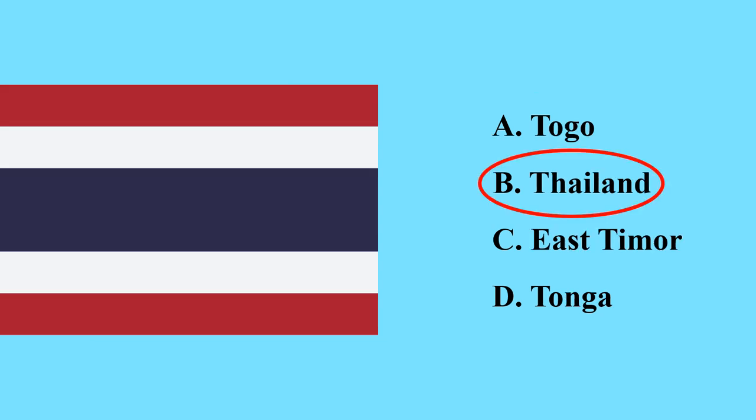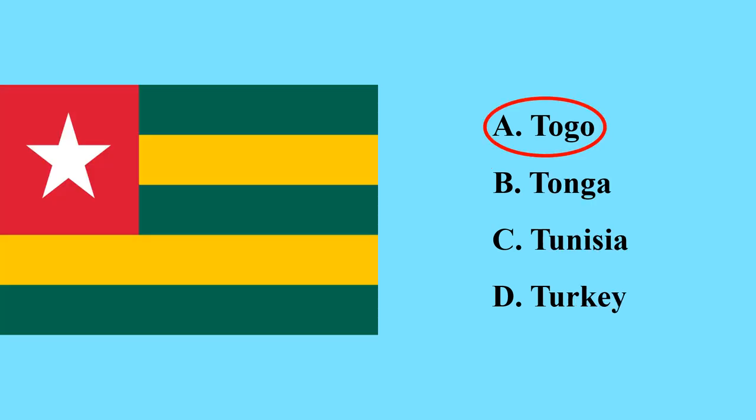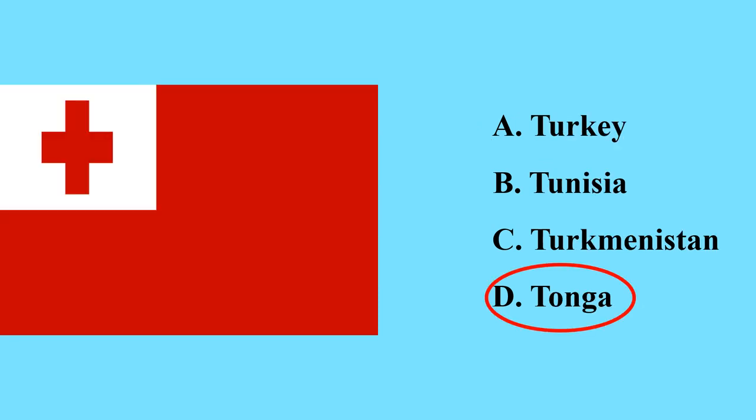This is the flag of Thailand — a country in Asia. This is the flag of East Timor, sometimes called Timor-Leste. This is the flag of the closest and longest country in West Africa, that is Togo.